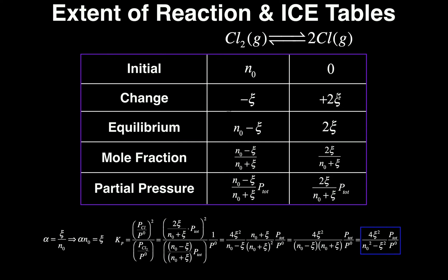Then we can go and calculate the equilibrium pressures. To do this, we just add the initials plus the changes. If I add N₀ plus (−ξ), then the equilibrium amount of Cl₂ is N₀ − ξ. For atomic chlorine, if I add the initial 0 plus 2ξ, the equilibrium amount is 2ξ. You pretty much went up to this point in general chemistry — probably not symbolically, with actual numbers — but this is the point you reached. What we can do now in physical chemistry is calculate mole fractions and partial pressures.